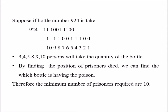Suppose we consider bottle number 924 — convert it into binary format. The positions where 1 appears give the liquid quantity to those prisoners. In this case, positions 3, 4, 5, 8, 9, and 10: those prisoners will take a quantity from that bottle.